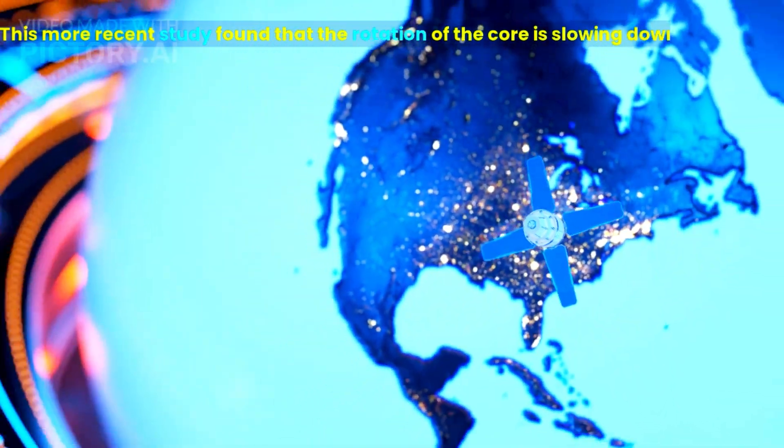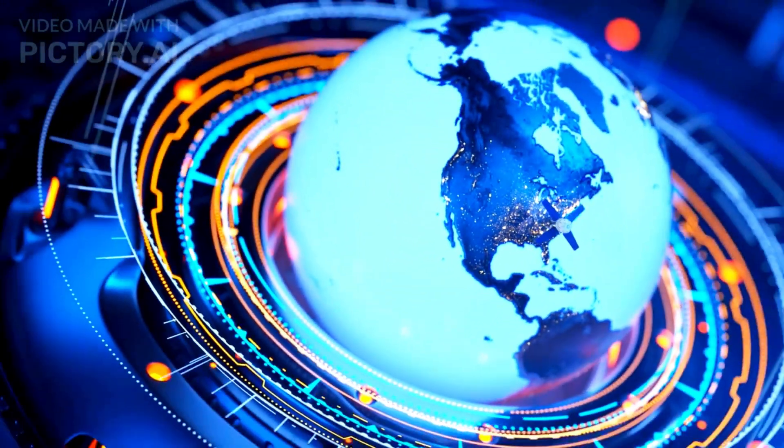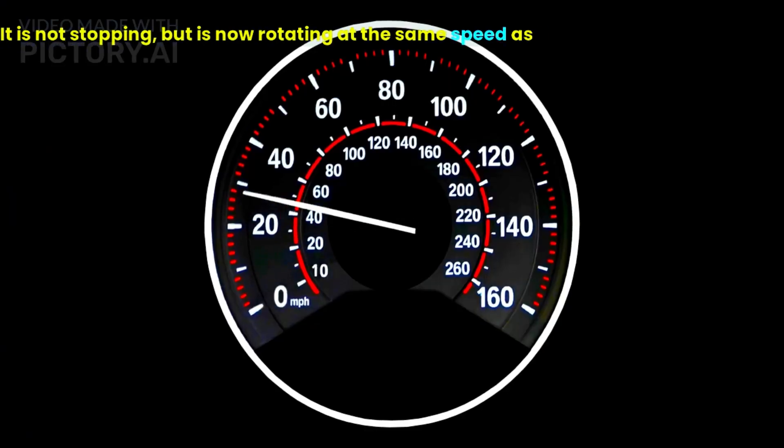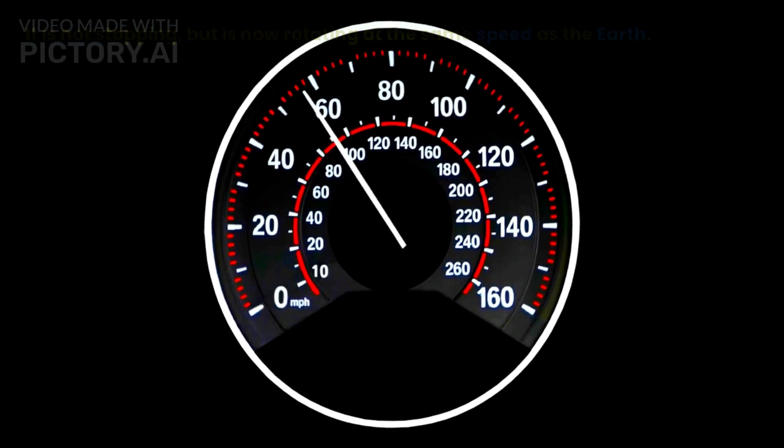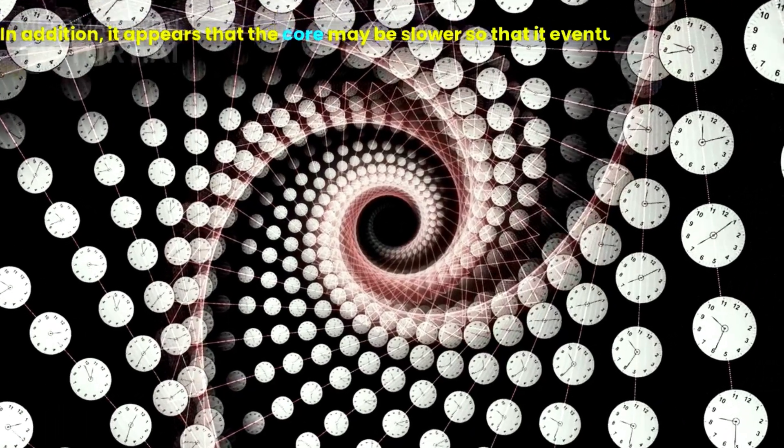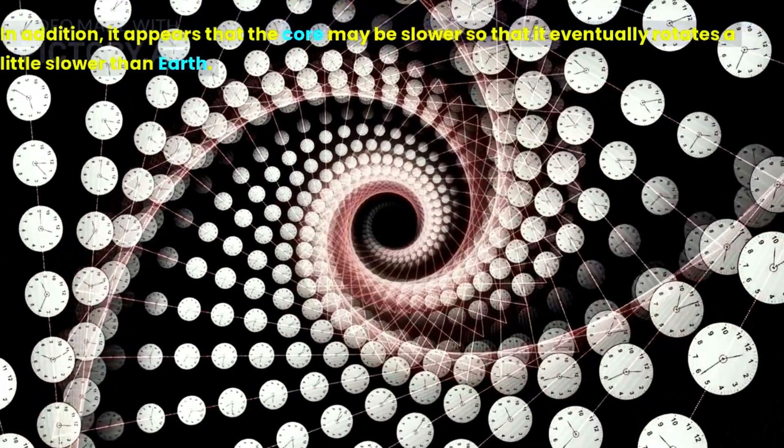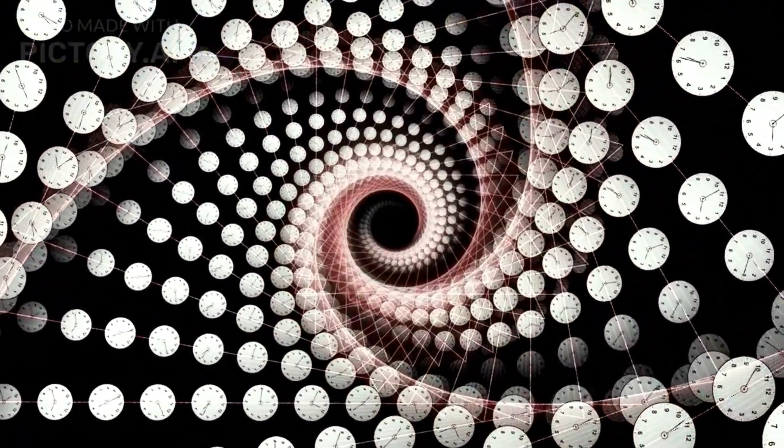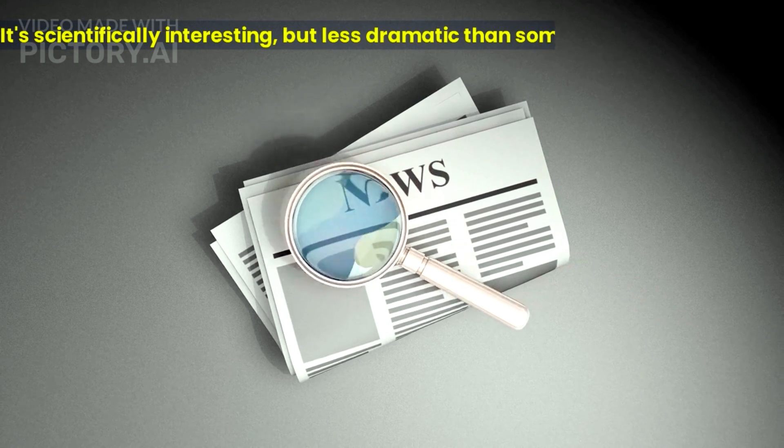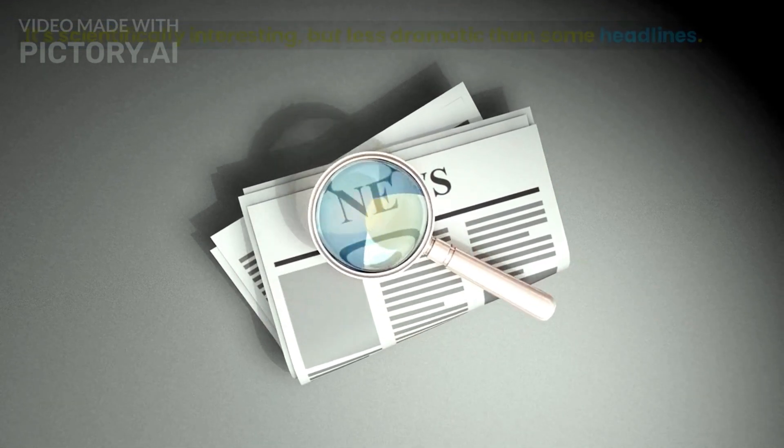This more recent study found that the rotation of the core is slowing down. It is not stopping, but is now rotating at the same speed as the Earth. In addition, it appears that the core may be slower so that it eventually rotates a little slower than Earth. It's scientifically interesting, but less dramatic than some headlines.